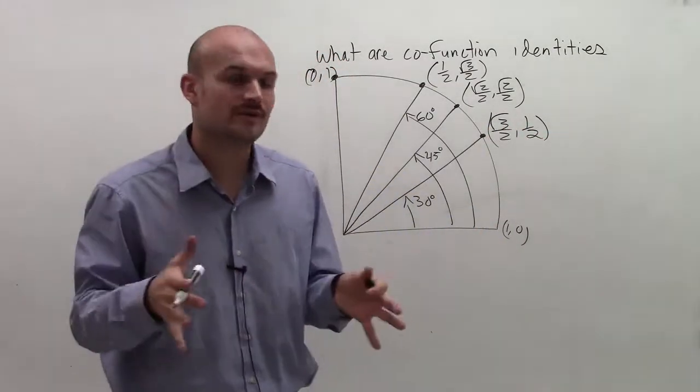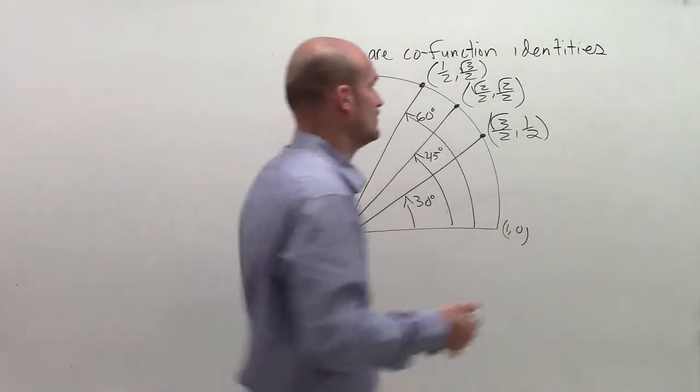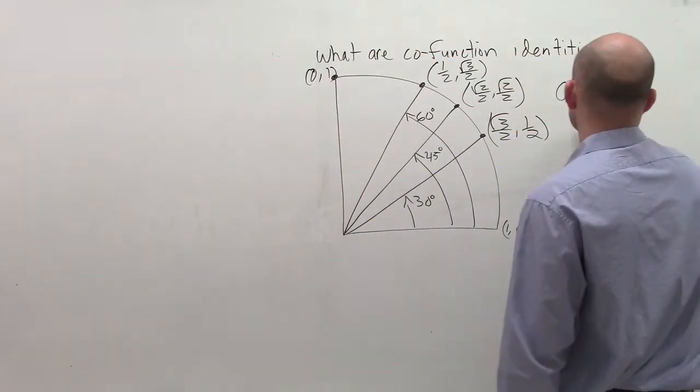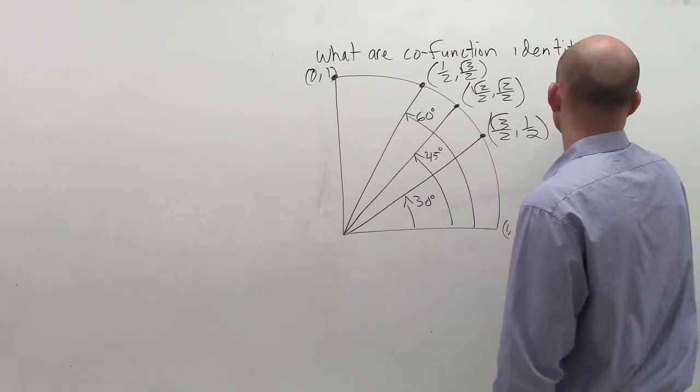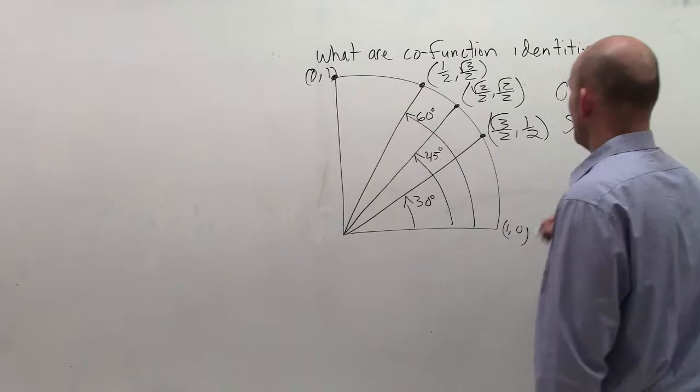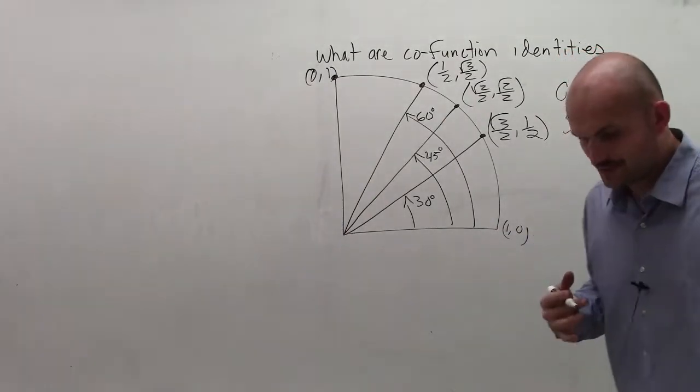All right, so hopefully you guys remember that the cosine of a function, cosine for any angle, was equal to the x value of your coordinate. The sine of any angle was equal to the y value. And I'm not going to really talk about tangent for right now.